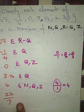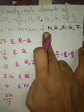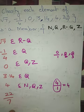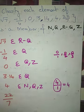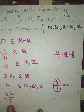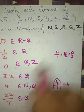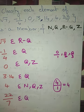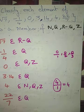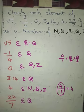Finally, 22 by 7. It is not a natural number because it is in the form of a fraction. It is a rational number because it has a numerator and a denominator and is in the form P by Q. There is no root sign, so it is not irrational, and it is not an integer either. So 22 by 7 belongs to Q. That is the answer for the first question.